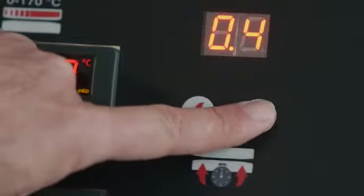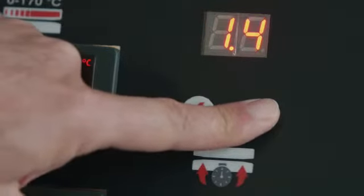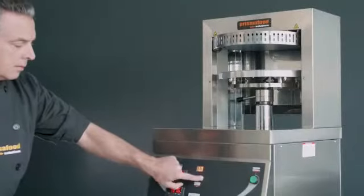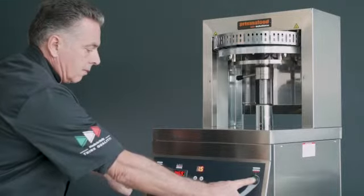The third step is to set the pressing time. Fully leavened dough requires a shorter time, while for non-leavened dough, we usually suggest setting the pressing time to 1.5 seconds.